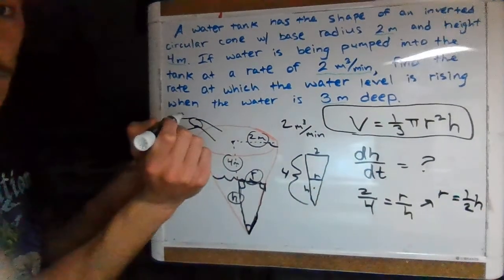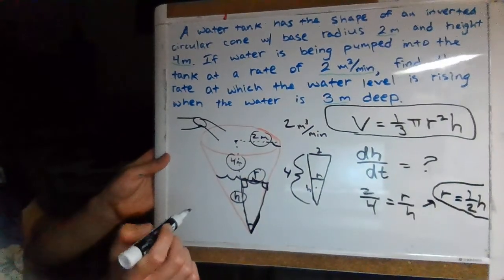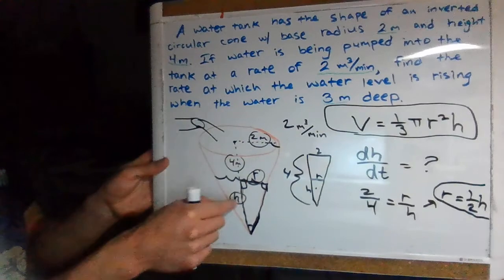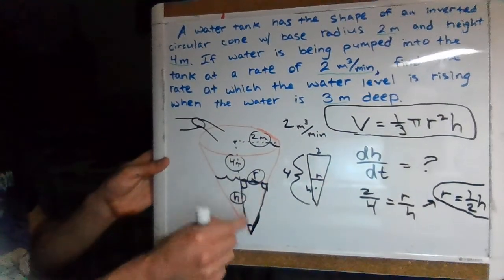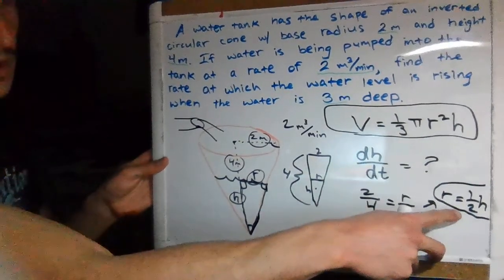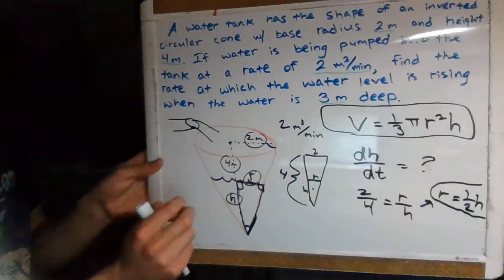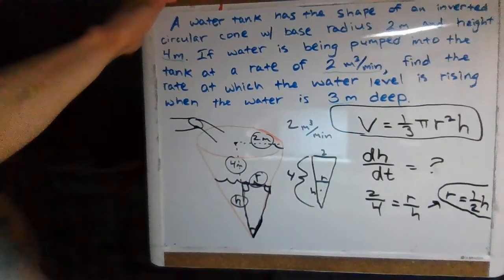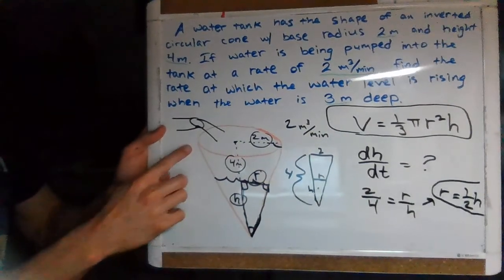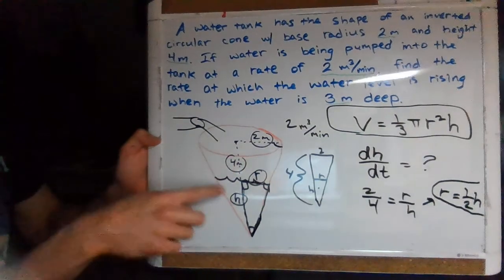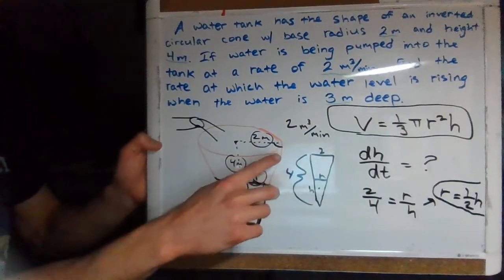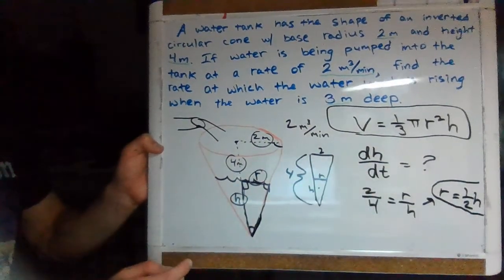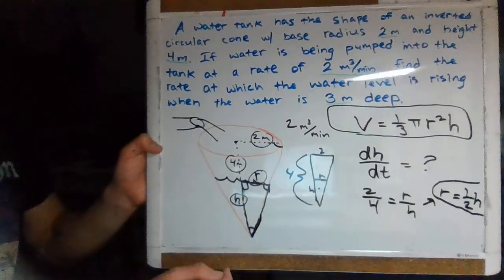Solving 2/4 = r/h for r gives us r = (1/2)h. Now we can substitute (1/2)h for r in our volume equation, leaving us with only one variable, h. We found this by recognizing that these are two similar triangles — a concept from geometry where equal angles mean proportional sides. This substitution eliminates the need to deal with the product rule and implicit differentiation on two separate variables.